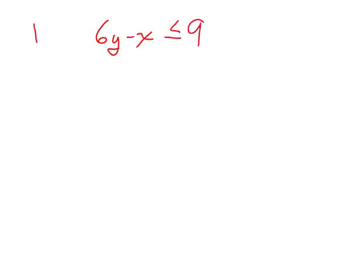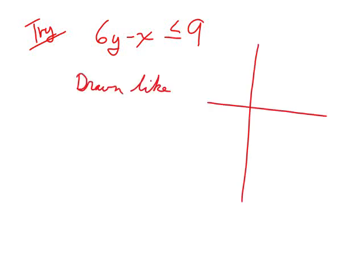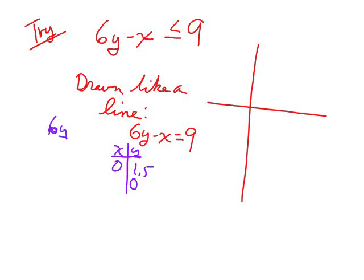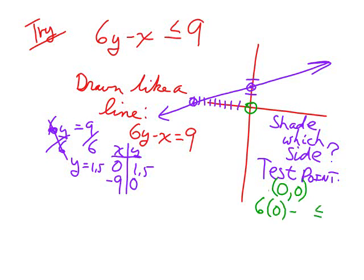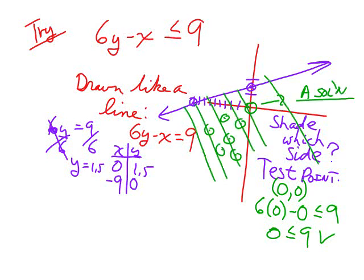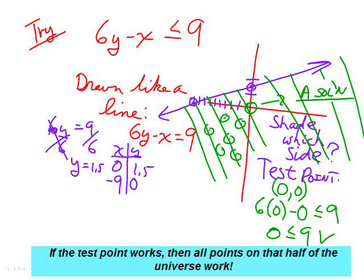Another example from the assignment: graph the inequality as a line using x and y intercepts, connect the points, then do a test point. My favorite is (0,0) — I'm very good at multiplying by zero. Is 0 less than 9? Yes. Therefore (0,0) satisfies the inequality, so all points on that side of the line are solutions — shade it in.